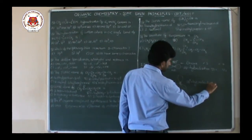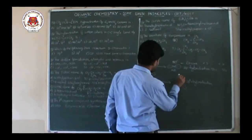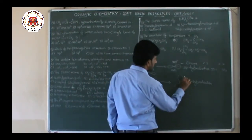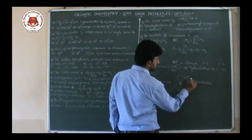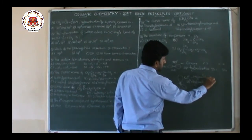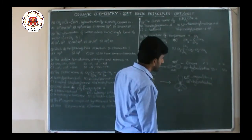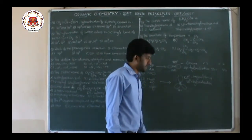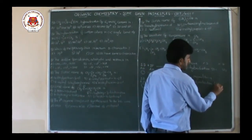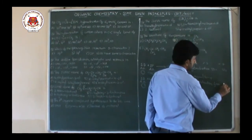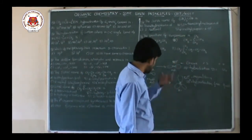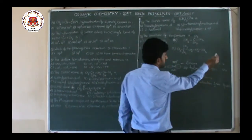In SP2 hybridization, the bond angle between the lobes of the hybrid orbitals is 120 degrees. The shape is trigonal planar. What about the percentage of S and P? Percentage of S is 1/3 × 100 — that is approximately 33.33%. Percentage of P is 2/3 × 100 — approximately 66.67%.